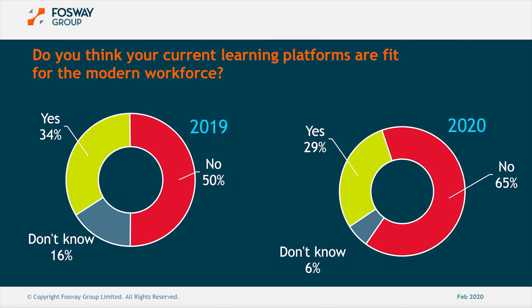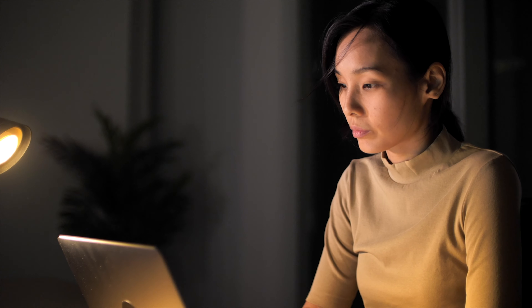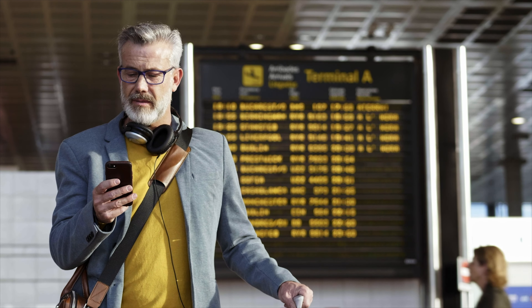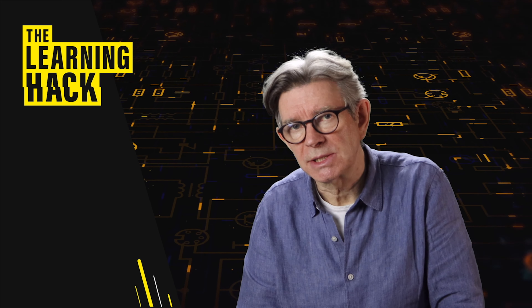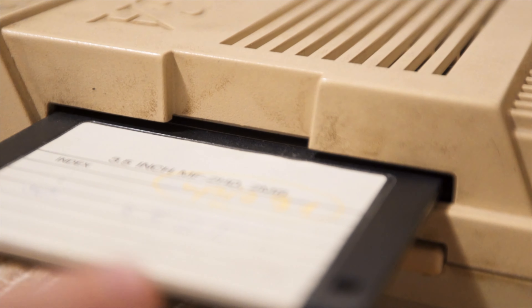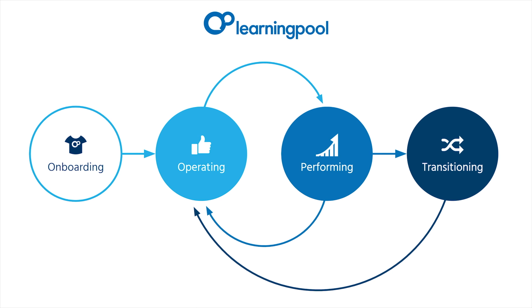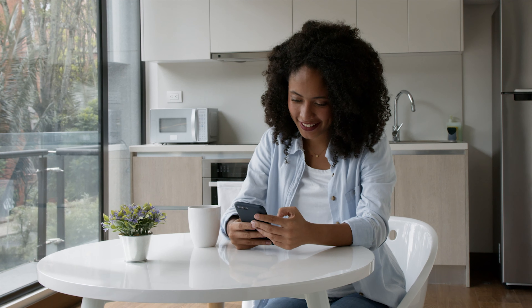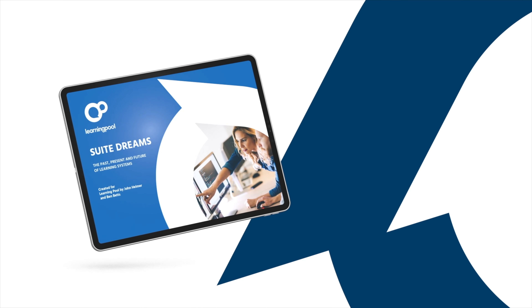The way we work has changed, and the way we learn is changing too. But 70% of organisations don't feel that their learning systems can really cope with all this change. It seems there is a disconnect between what learners need right now and what most learning suites provide. In a new white paper, Ben Betts and I tell the story of how this disconnect happened and lay out a vision for what a modern learning system ought to be and do. It's called Sweet Dreams, and you can read it now.